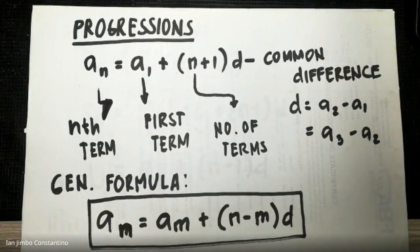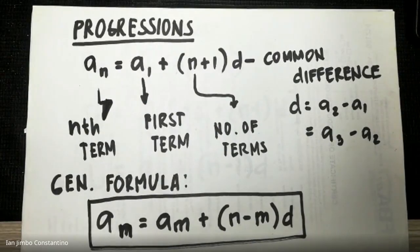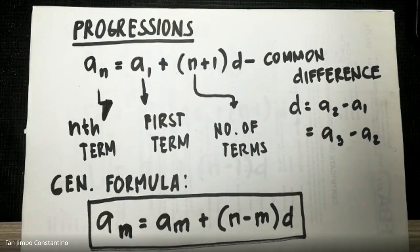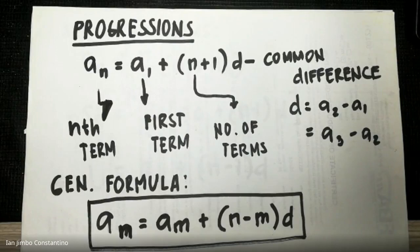There are four types of progressions: arithmetic progression, geometric progression, infinite geometric progression or sequence, and harmonic progression. A progression is a certain number that is decreasing or increasing in such a way that it has a common difference and a common ratio.